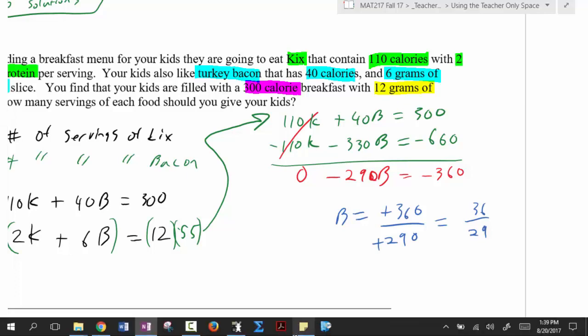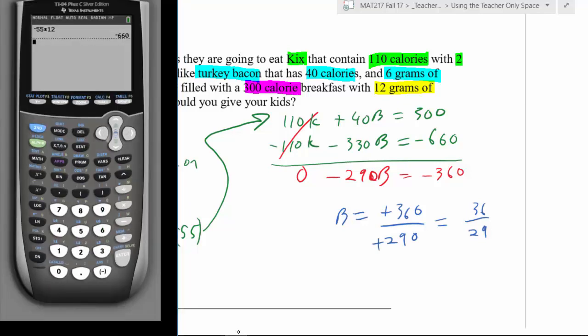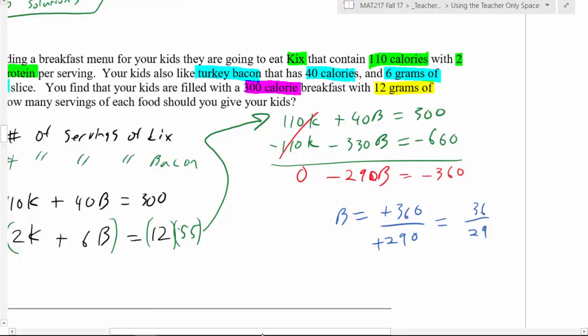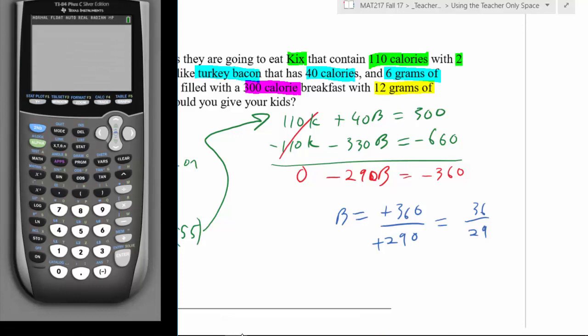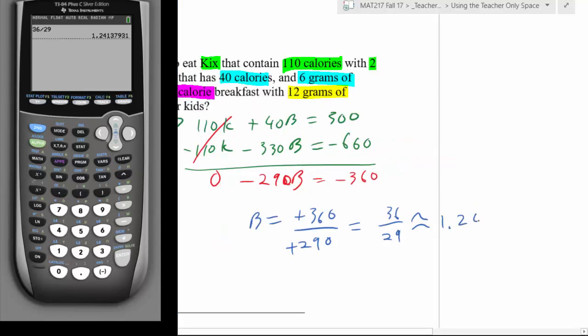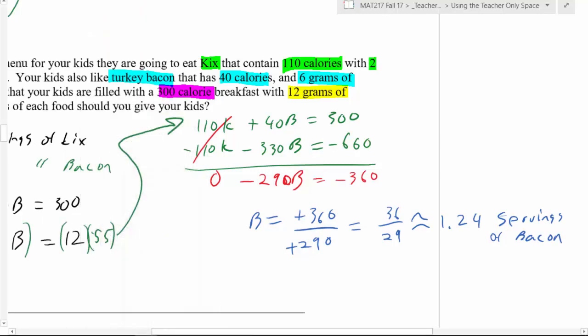Now go into the kitchen and tell your mother, spouse, whatever, that you want 36 29ths servings of bacon, and see what kind of look you get, right? It's gonna be a funny one. So yeah, in the real world, you're not gonna give an answer of 36 29th slices of bacon, you're going to give a decimal approximation. So we're gonna get that and say, okay, this is approximately 1.24 slices of bacon, or servings of bacon. It's slices of the package, but servings of bacon. Don't forget your units. And so we're gonna say 1.24 servings. What does that mean? Give me one and a quarter slices of bacon, and I'll get my protein.